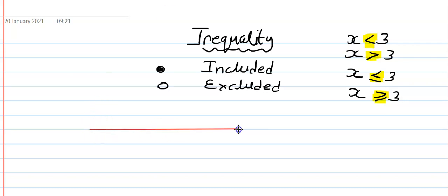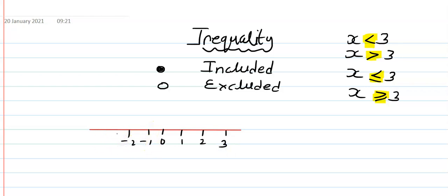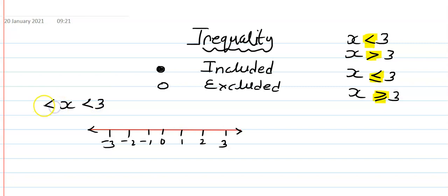If this is a number line, let's write down: in the middle is 0, this side is 1, this side is 2, this side is 3, and here it is minus 1, minus 2, and minus 3, and so on. Our question is: you need to show x less than 3 and greater than or equal to minus 1.